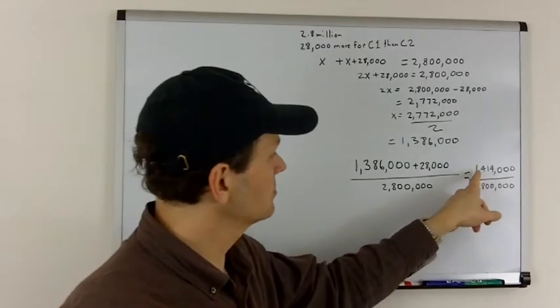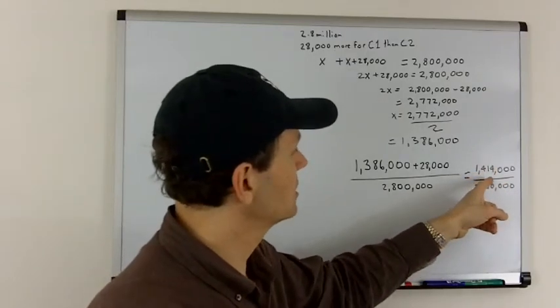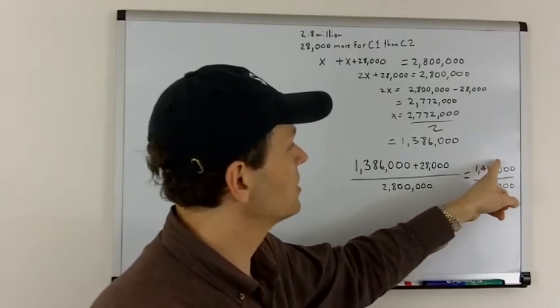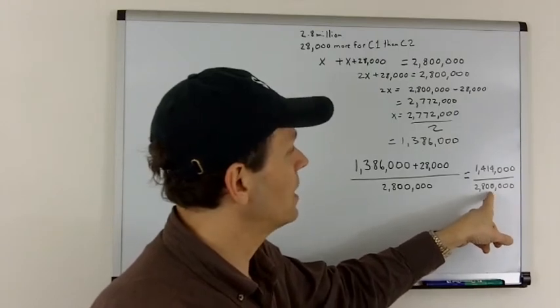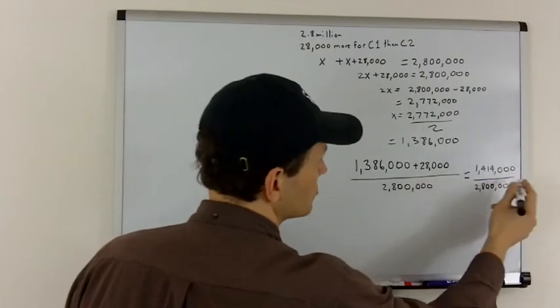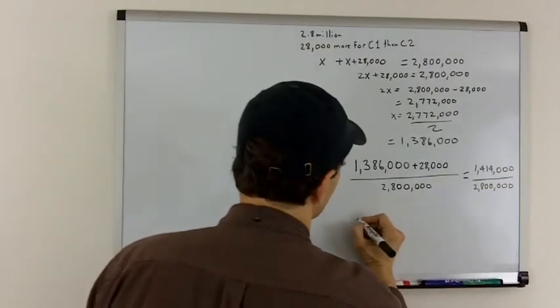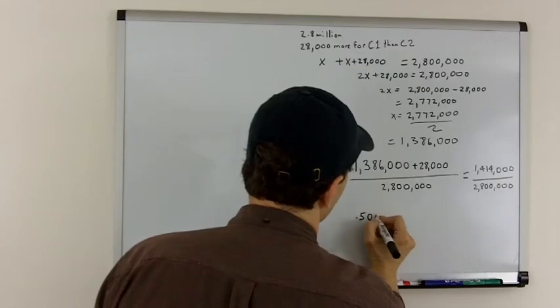which, if you do the math, and you can use a calculator to determine this, you get 1,414,000 over 2,800,000. And if you plug this into a calculator, what you will get is 0.505.